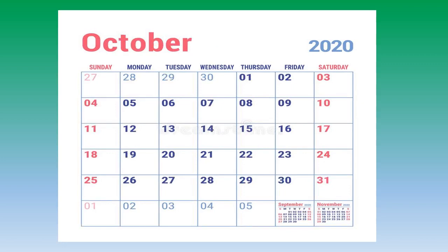October is the tenth month of the year. During this month, generally we celebrate Diwali, the festival of lights. People wear new clothes and prepare delicious food items and wish happy Diwali to friends and relatives. And children love to burst firecrackers.